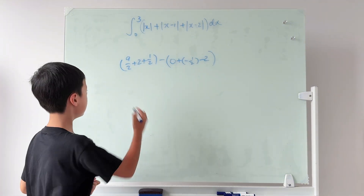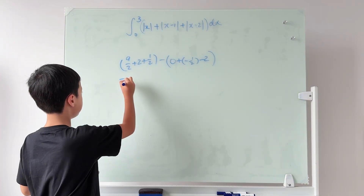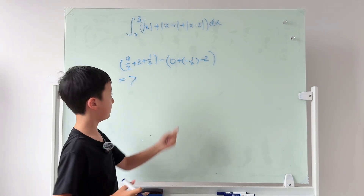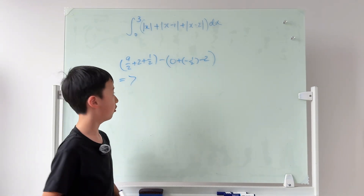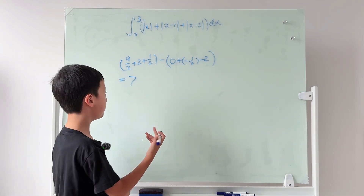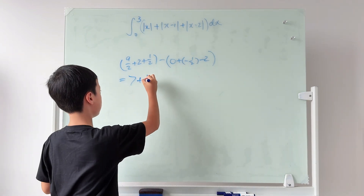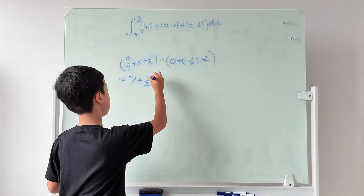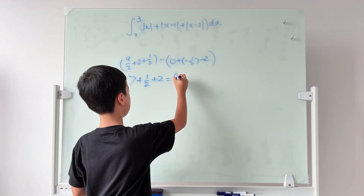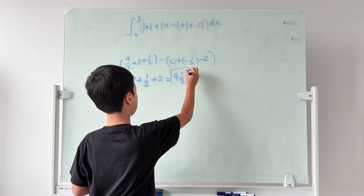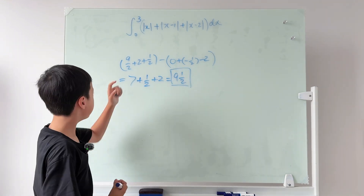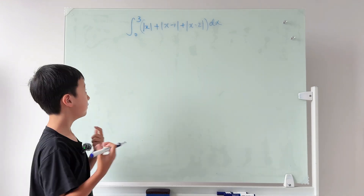The first bracket gives 7. The second bracket: the zero drops, and opening the negative signs gives plus 1/2 and plus 2. Adding everything together gives 9 and one half — so 9.5 is the final answer.